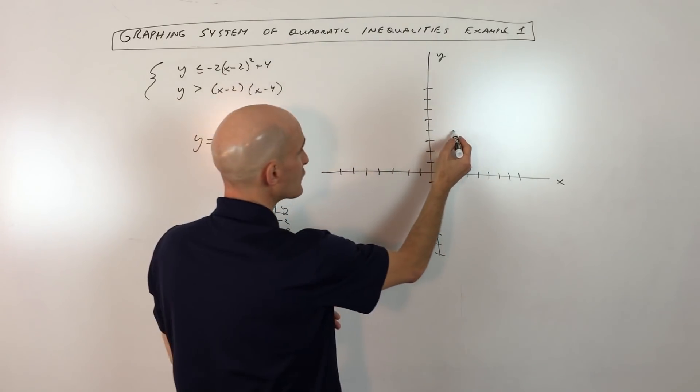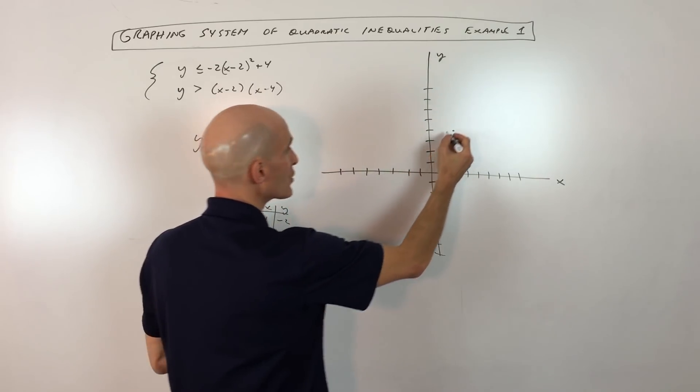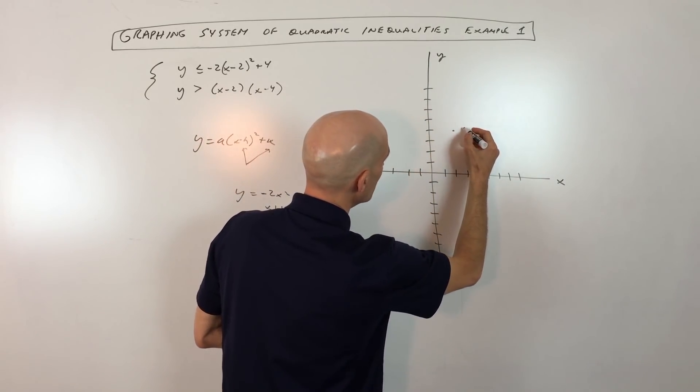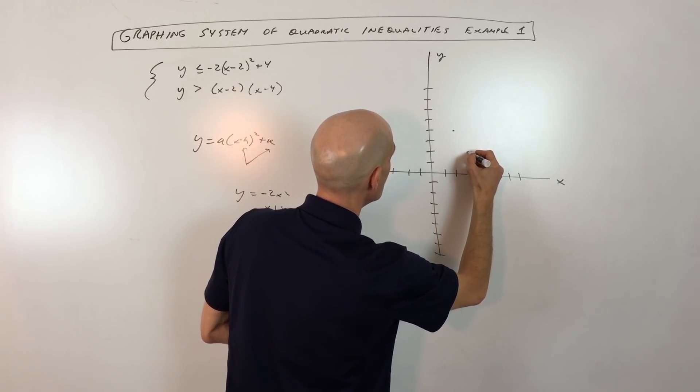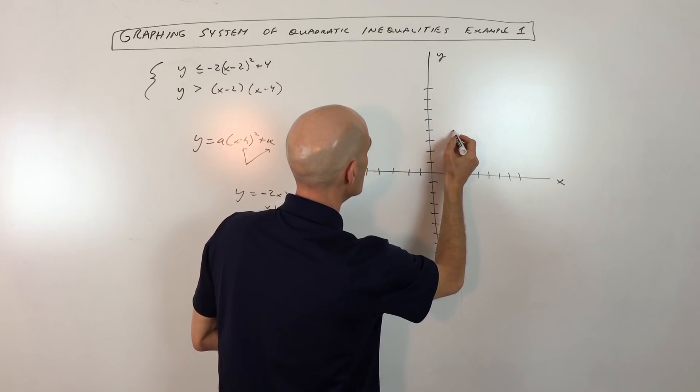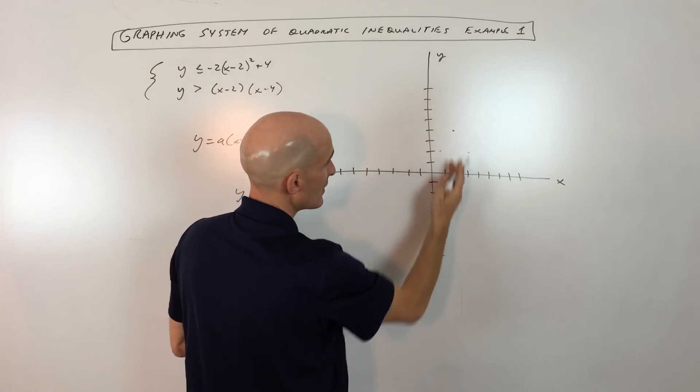So if we plot those points from the vertex as if it was the origin, we're going to go right 1 and we're going to go down 2. So that looks like it's going to be right about there. Same thing over here. We're going to go left 1, down 2, because it's symmetric about that axis of symmetry, about the vertex.